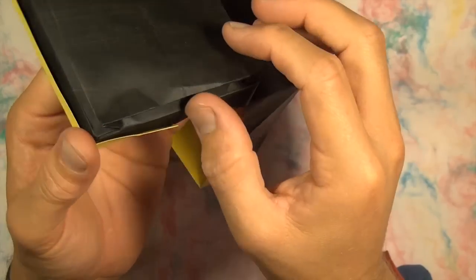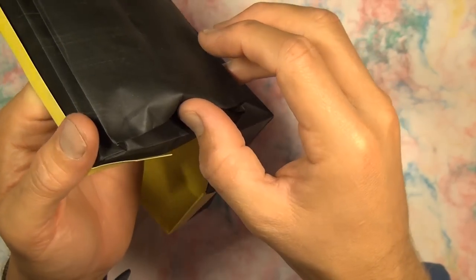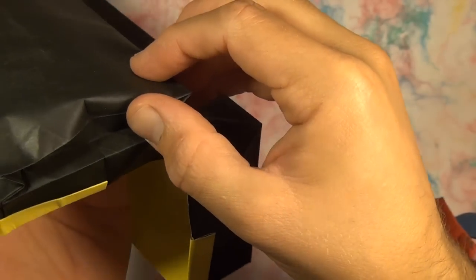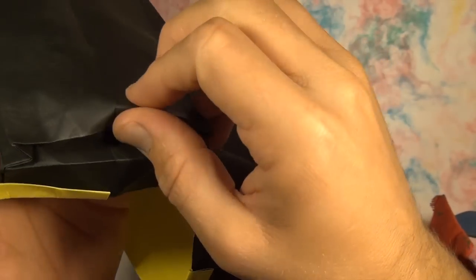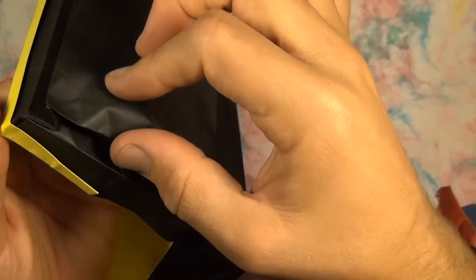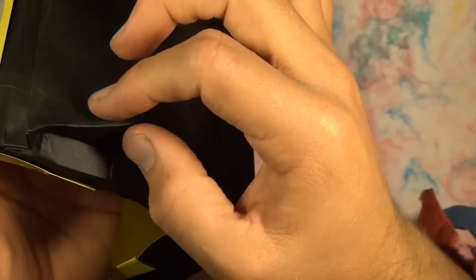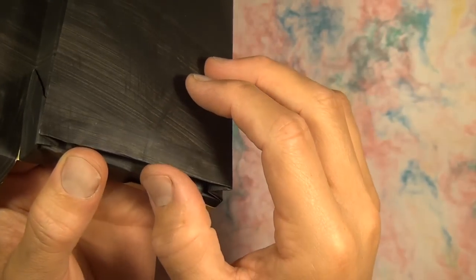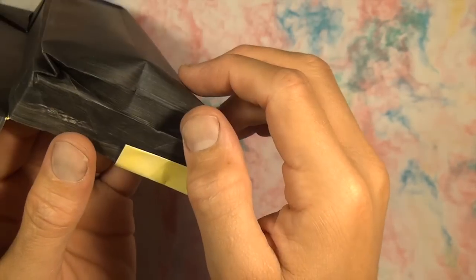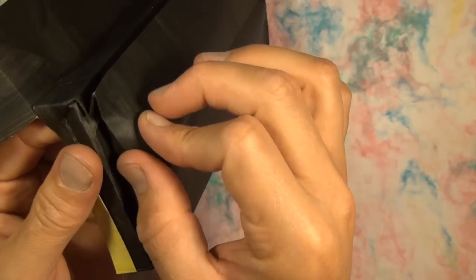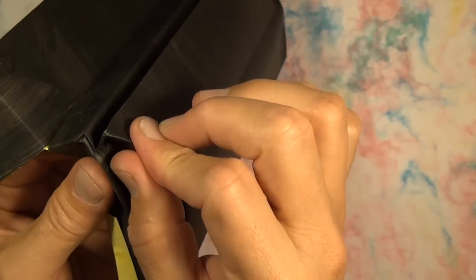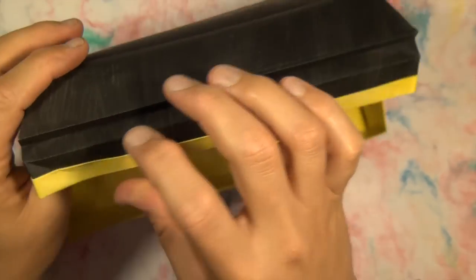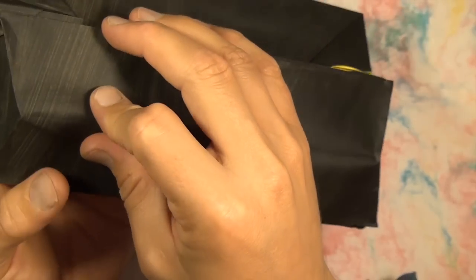All right, and now the last step is we're going to push this edge in just like this. And make a fold that goes from this point right to this point. A mountain fold. And from this point to here. And let's do the same thing on this end. So push in. And mountain. And mountain fold.